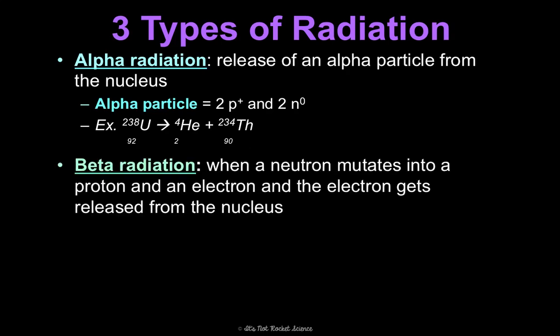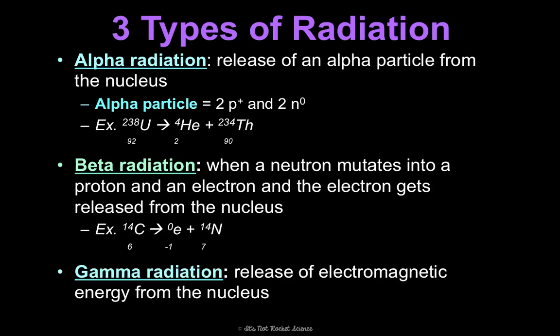Beta radiation is when a neutron actually mutates into a proton and an electron, and the electron gets released from the nucleus. For example, carbon-14 gives off one electron and ends up making nitrogen — because a neutron becomes a proton, the proton number changes, so it's no longer carbon, it's now nitrogen. Last is gamma radiation, which is the release of electromagnetic energy from the nucleus, created by energy given off between electric and magnetic fields. This happens during alpha or beta radiation, so it's kind of a secondary process.